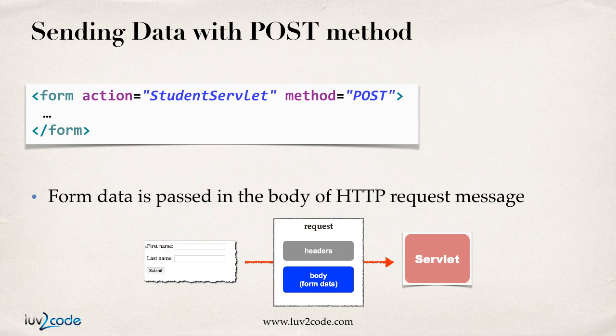Now, sending form data using a POST method, the form data is actually passed in the body of the HTTP request message. The request message has a body section, and the name-value pairs are included inside of the body of the POST method, so you won't see it in the browser's URL.